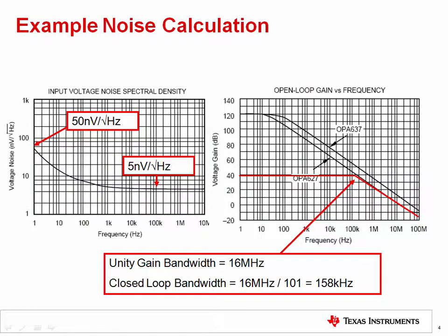The curve on the left is the voltage spectral density curve. Remember from earlier videos that it has a 1 over f region and a broadband region. The right hand curve is the open loop gain, or AOL, curve. The bandwidth of the circuit is only determined by the AOL curve because there is no other filter. Dividing the OPA637's unity gain bandwidth of 16 megahertz by our gain of 101, we get a closed-loop bandwidth of 158 kilohertz. This can also be seen graphically.